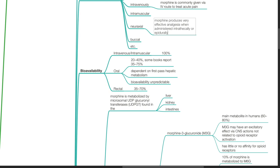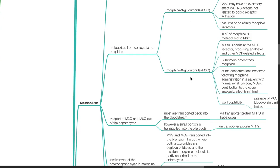Bioavailability for intravenous or intramuscular route is 100%. Oral bioavailability is 20 to 40%. Some authors report 35 to 75%. It is dependent on first-pass hepatic metabolism. Bioavailability via oral route is unpredictable. Rectal route bioavailability is 35 to 70%.